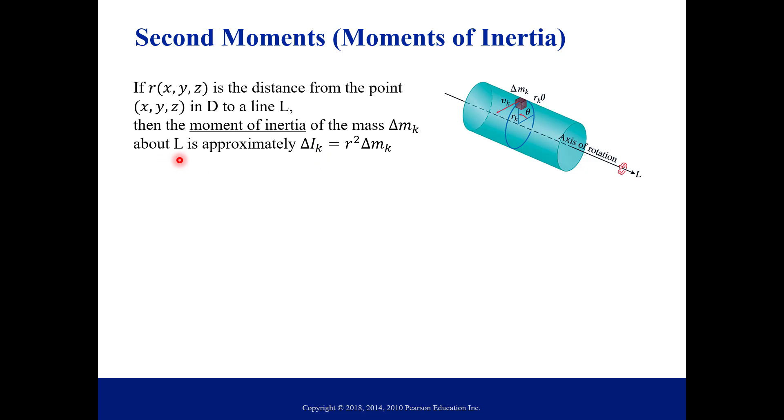About this axis of rotation L is approximately, and this is our notation for it, is our delta I sub K, which is going to be our distance squared, R squared, times our change in our mass, so delta M or M sub K. Okay, let's put this together.